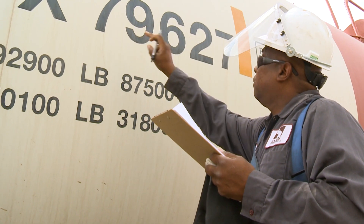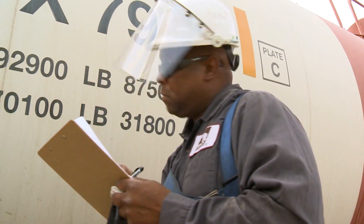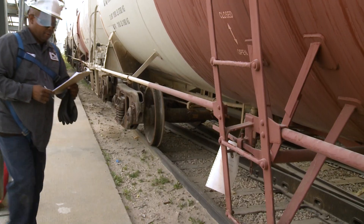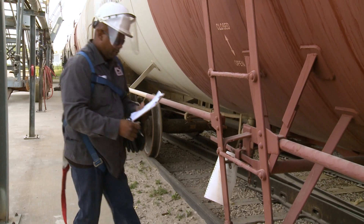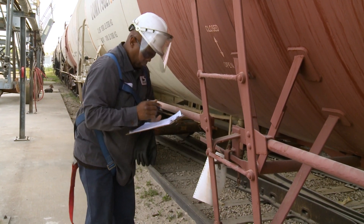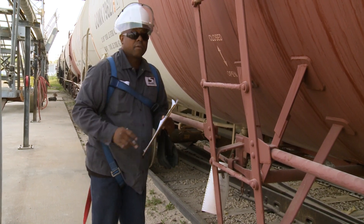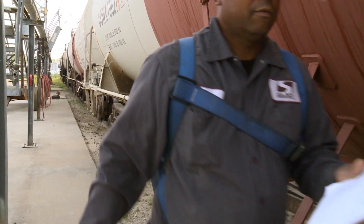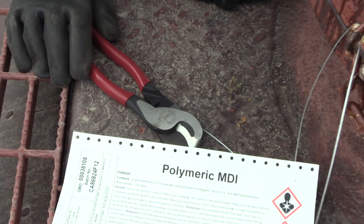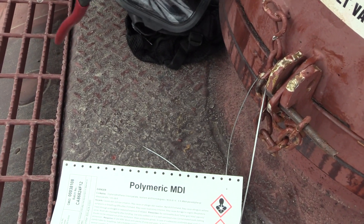Compare el número del carrotanque con el número identificado en los documentos de transporte. Verifique el carrotanque para asegurarse de que los números que figuran en los sellos de seguridad sean los mismos números de los sellos en la documentación. También confirme que los sellos de seguridad no estén rotos ni se hayan alterado de ninguna manera.